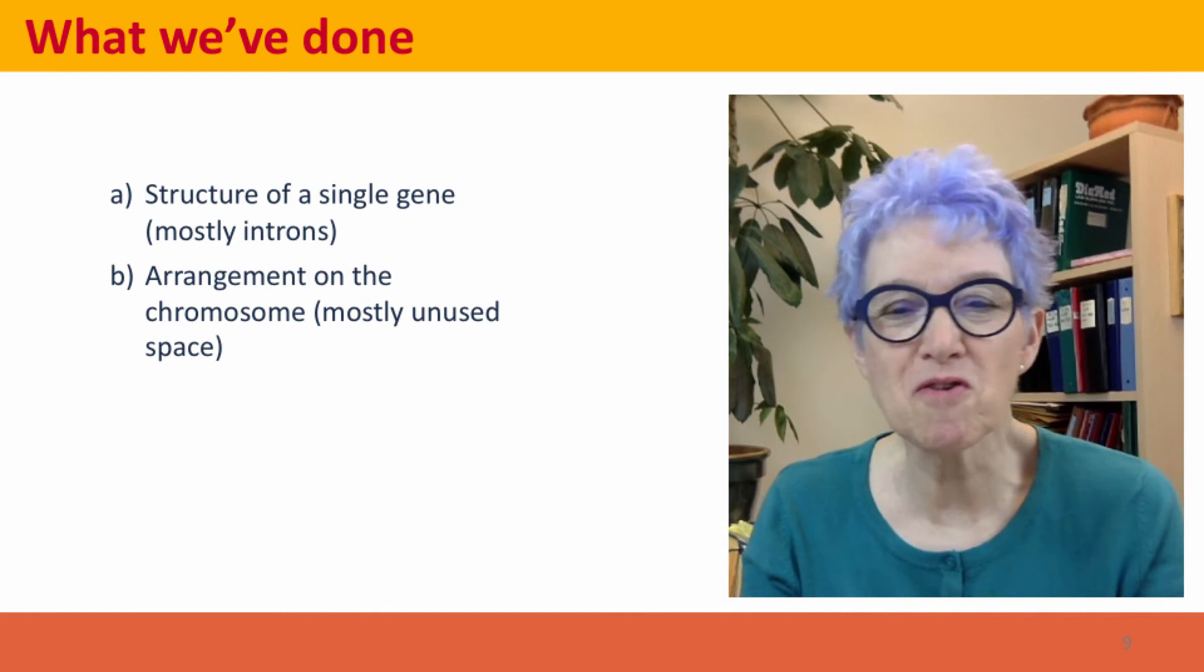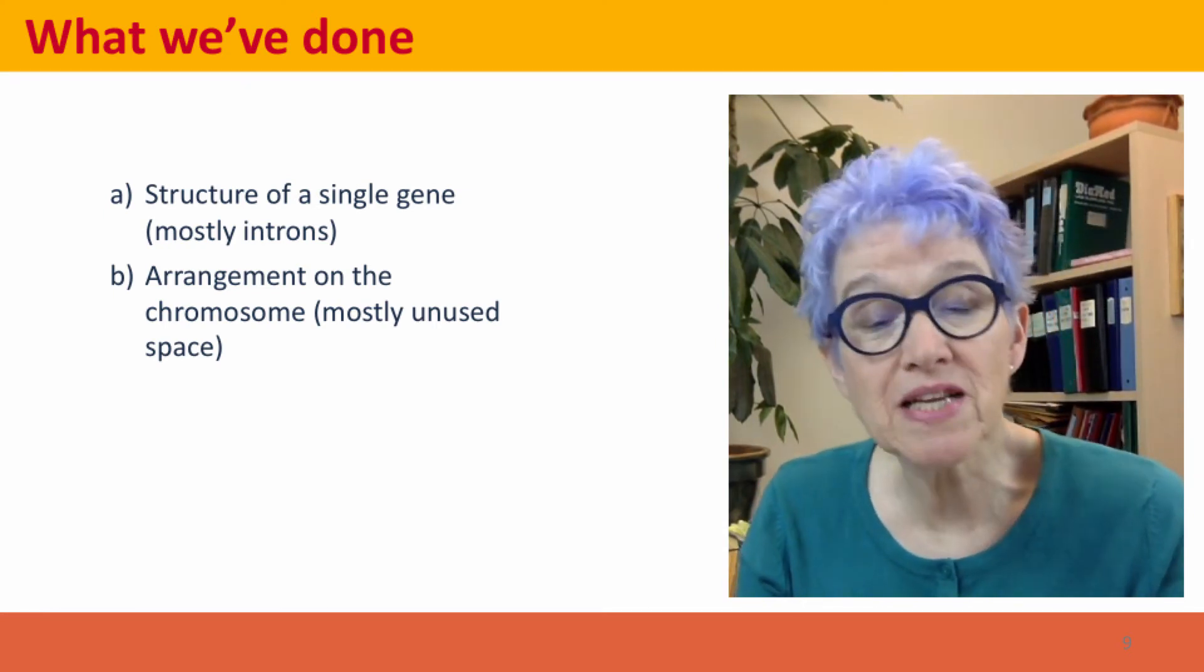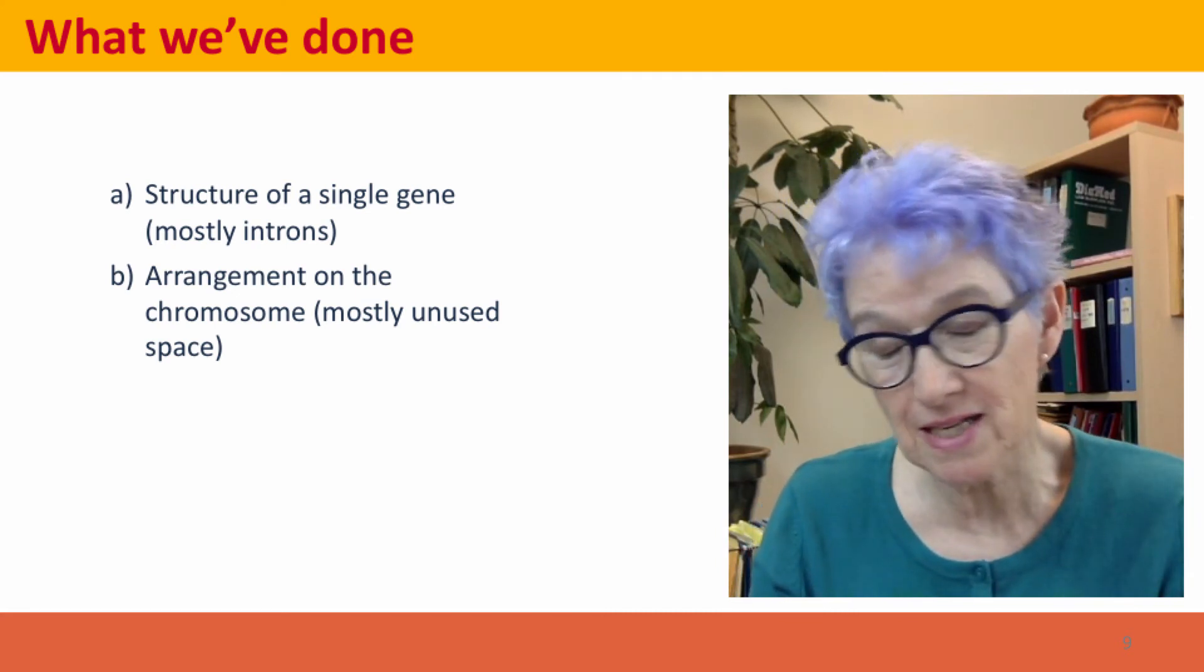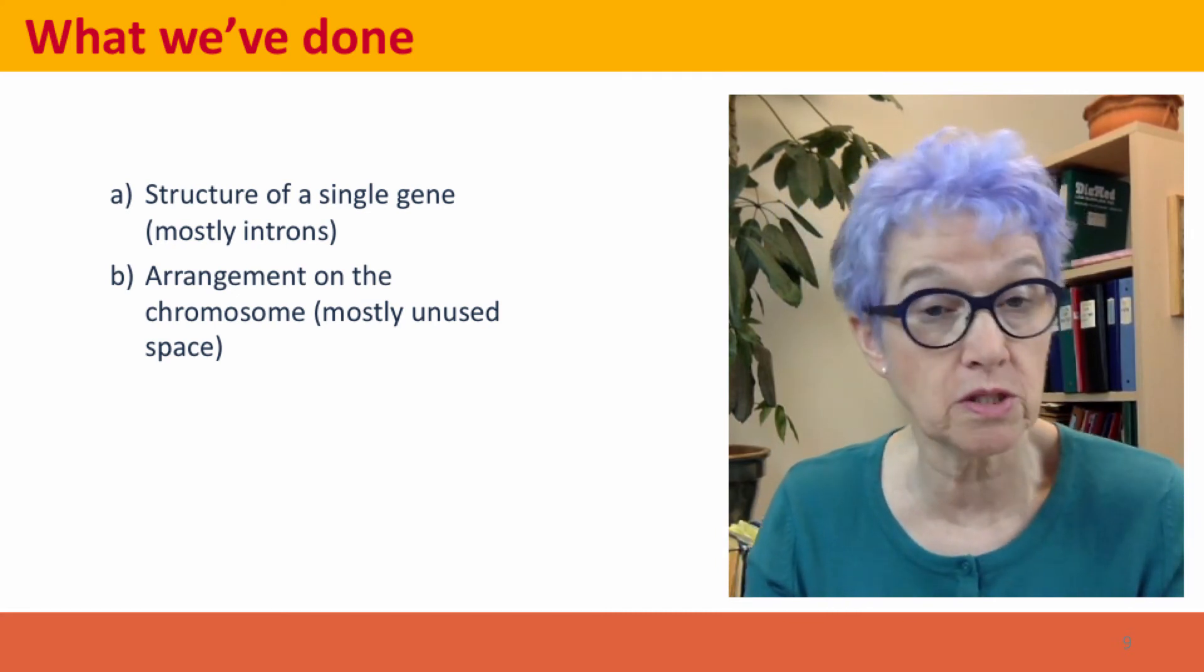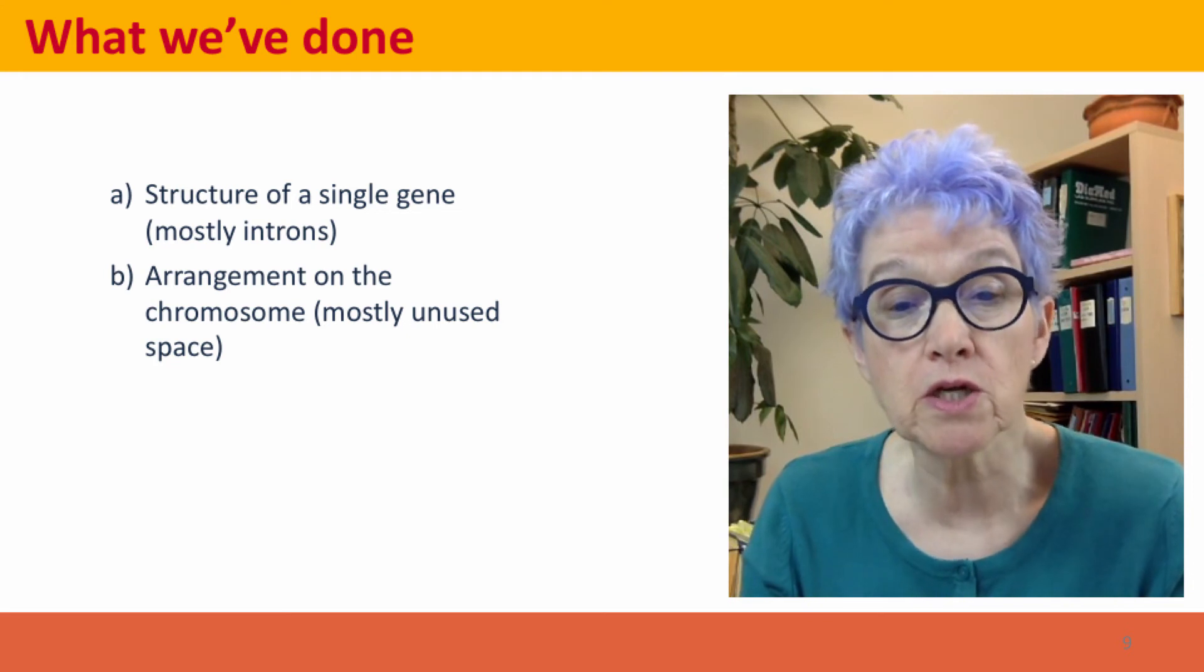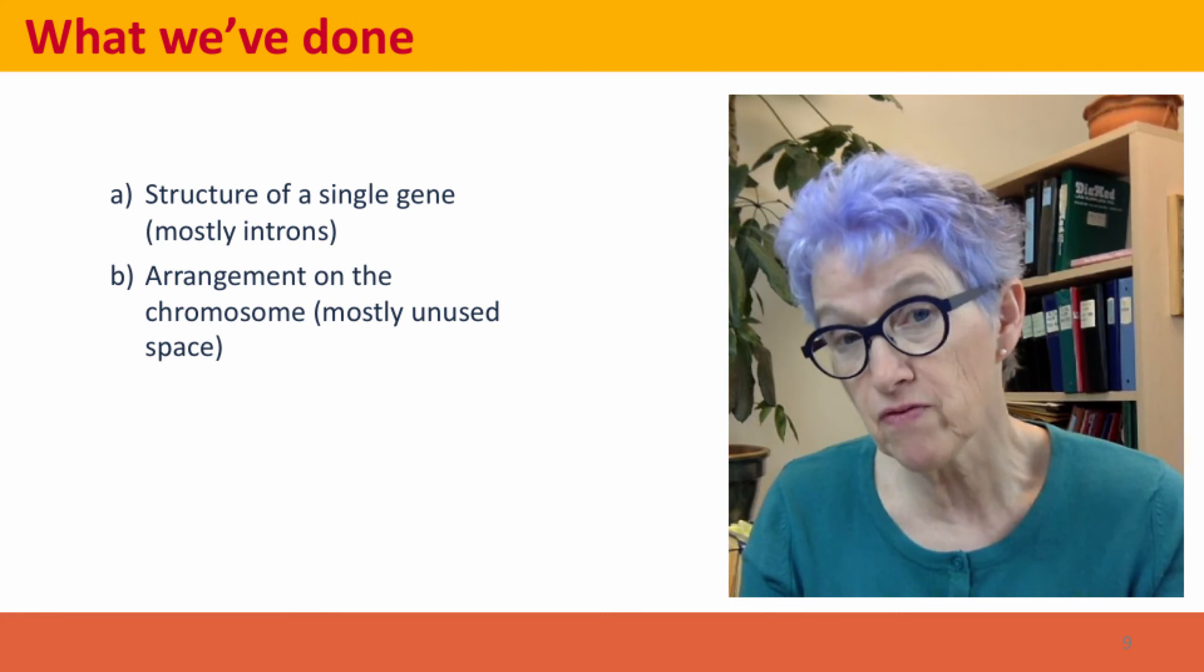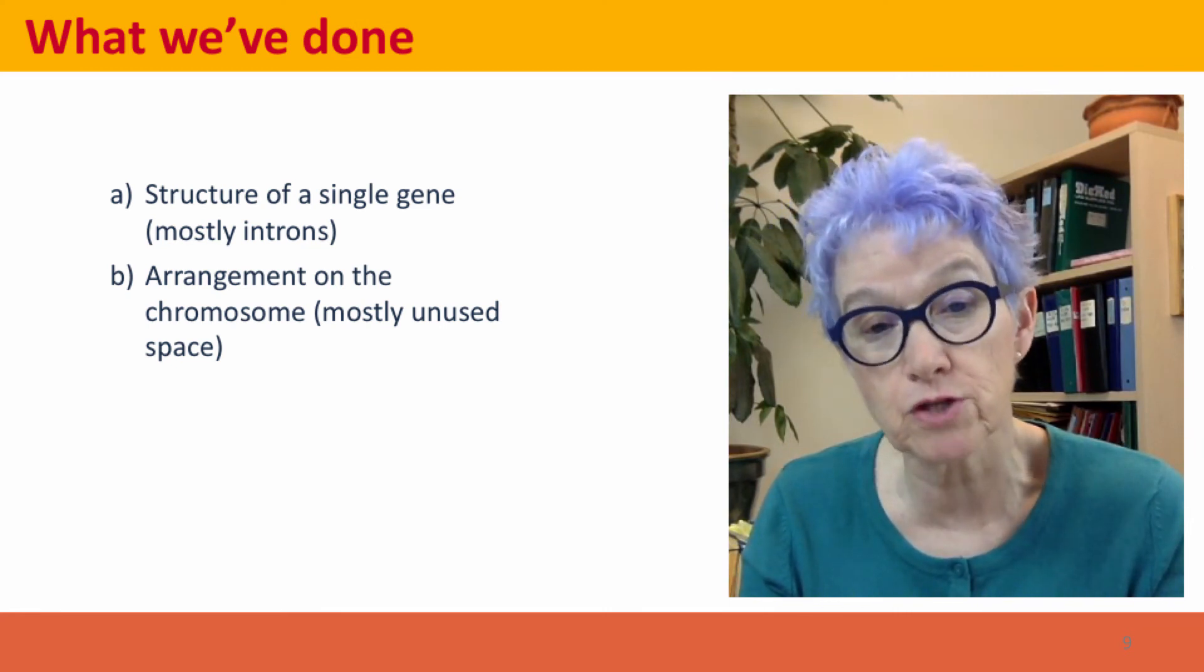Now, what we've done, we've dived into the structure of a single gene on a chromosome. We've seen that the gene is mostly introns, and we've looked at the arrangement of genes over a large scale in the chromosome, seeing that most of the chromosome is actually unused space.